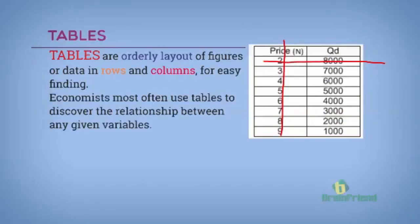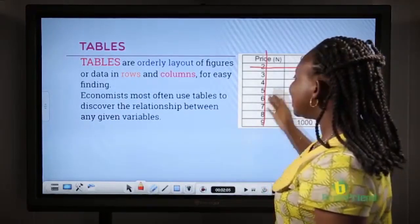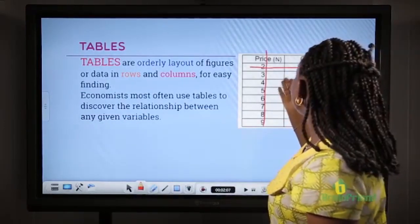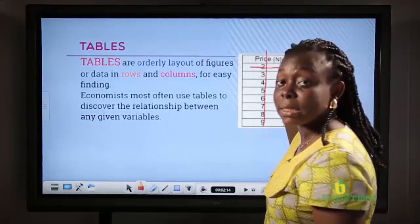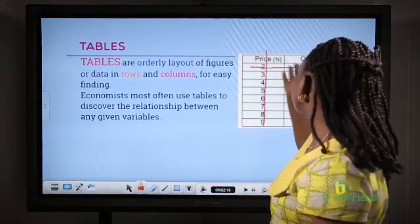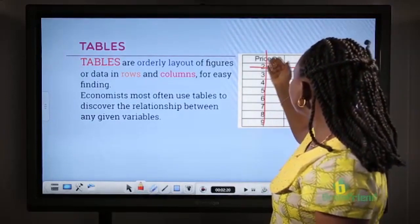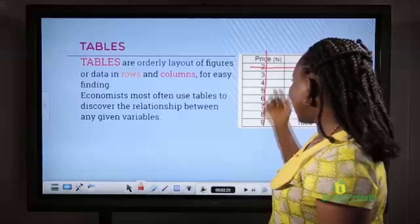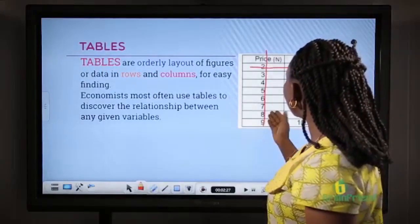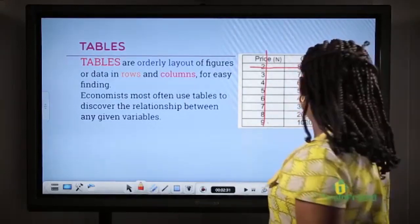We have a table with price and quantity demanded. This table is just basically to look at or analyze the relationship that price have with quantity demanded. So from the table we can easily say, at a lower price of 2 naira, more quantities were demanded. And at a higher price of 9 naira, fewer quantities were demanded.